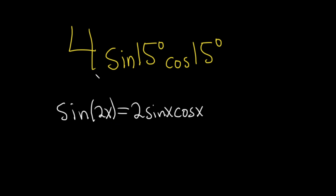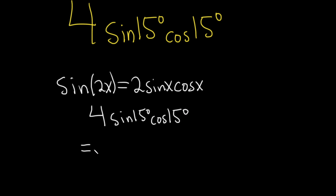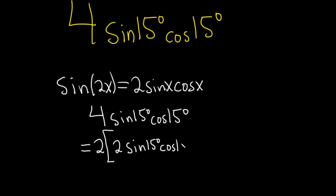What you can do here is pull out a 2. I'm going to rewrite the problem to have more room. So, 4 sine 15 cosine 15 — I'll pull out that 2, using a bracket for clarity, and we're left with 2 times 2 sine 15 degrees cosine 15 degrees.